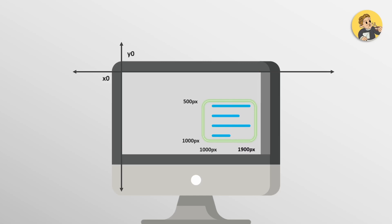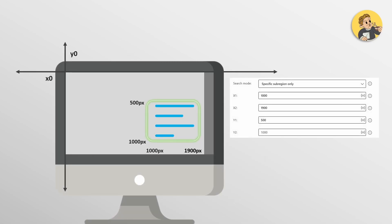Once we have measured those pixel distances, we have our four points and can use them in our activity as the X1, X2, Y1, and Y2 values. That is how you extract text from a specified sub-region only.